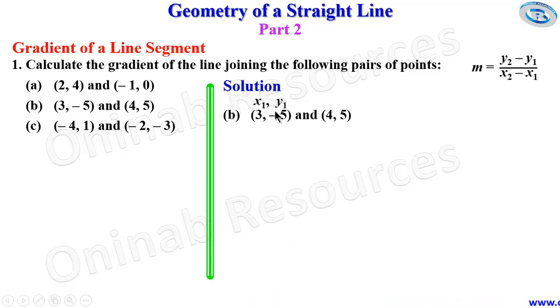For 1B, we name the point again x1, y1, x2, y2. Substituting into our formula for gradient, y2 is 5 minus negative 5 gives plus 5. This is over x2 which is 4 minus x1 which is negative 3.